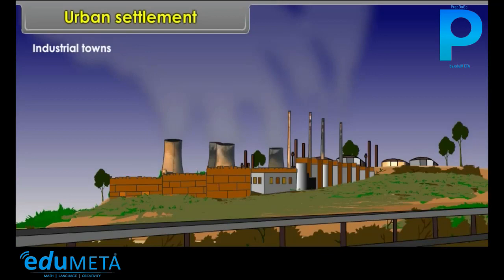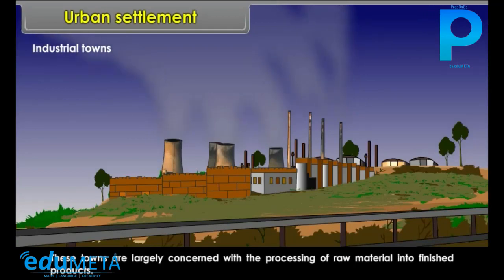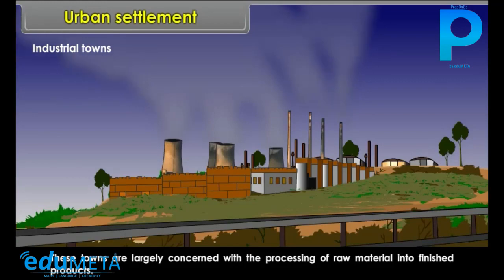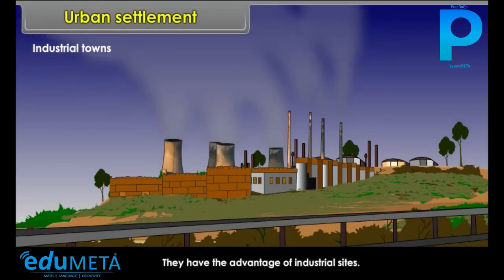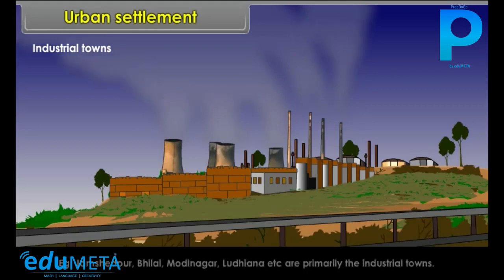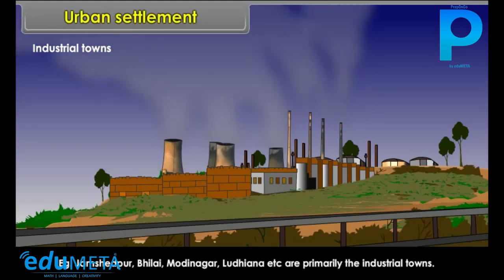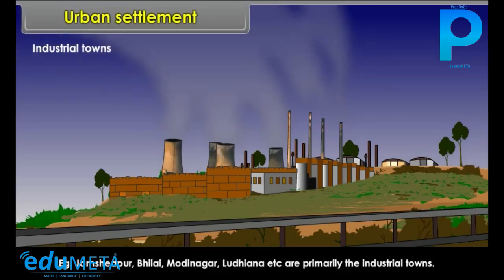Industrial Towns: These towns are largely concerned with the processing of raw material into finished products. They have the advantage of industrial sites. Examples include Jamshedpur, Bilai, Modinagar, Ludhiana, etc., which are primarily industrial towns.